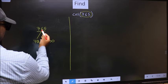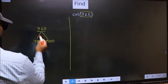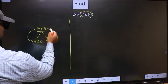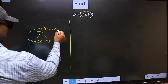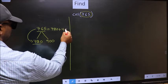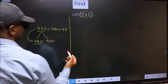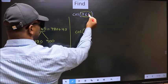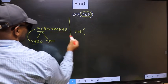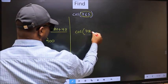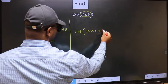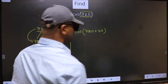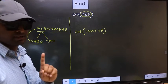Next, 765 is close to which number? This is close to 720. So in place of this, now we should write 720 plus 45. This will become cos, and in place of this, now we write 720 plus 45. This is your step 1.